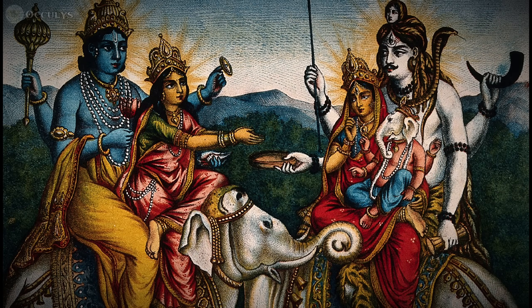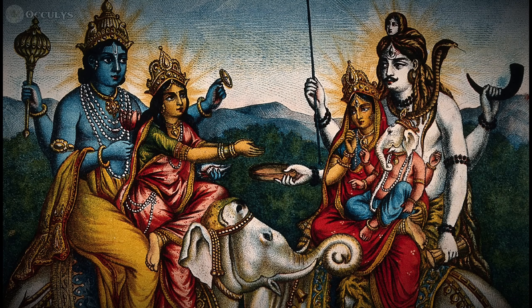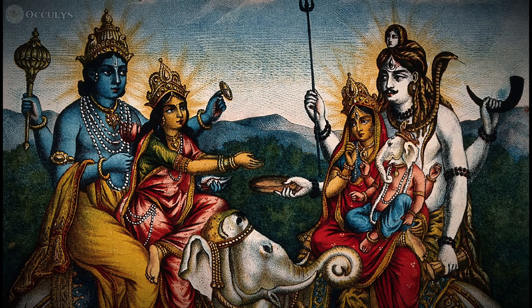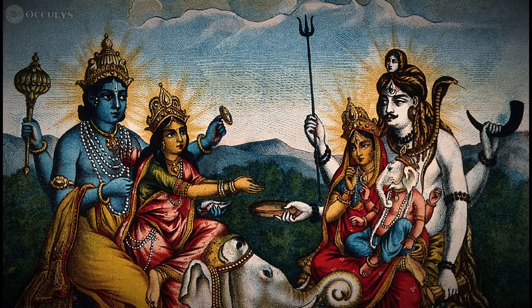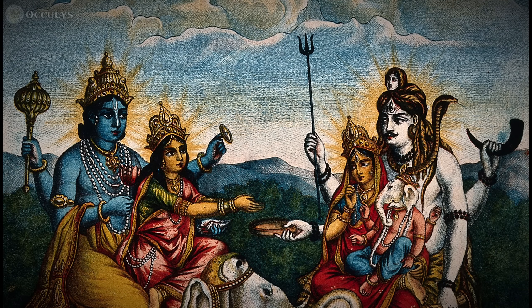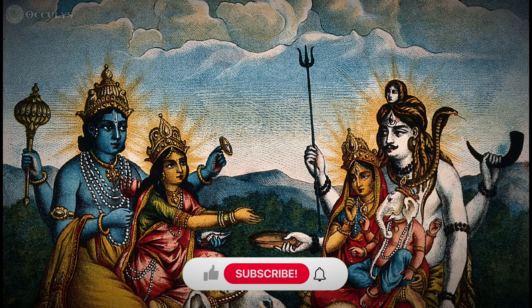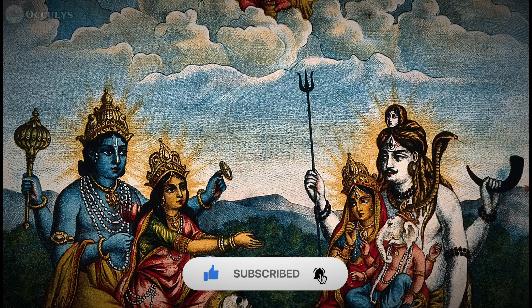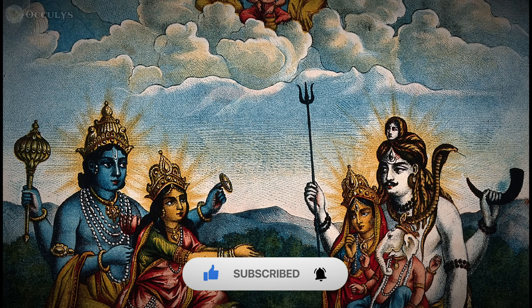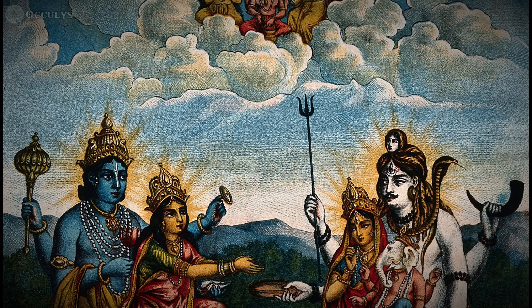This concept of a conscious cosmos also flourished in the great philosophical traditions of the East. In the Advaita Vedanta school of Hinduism, one finds the concept of Brahman, the single, universal consciousness that is the ground of all reality. The individual self, or Atman, is considered identical to this cosmic consciousness.